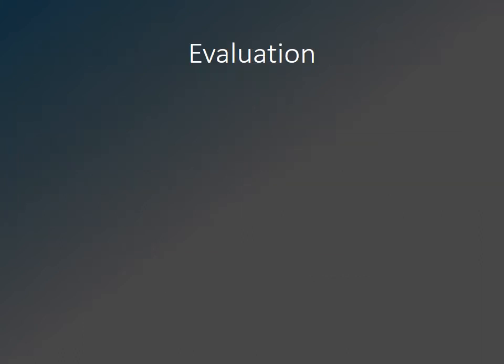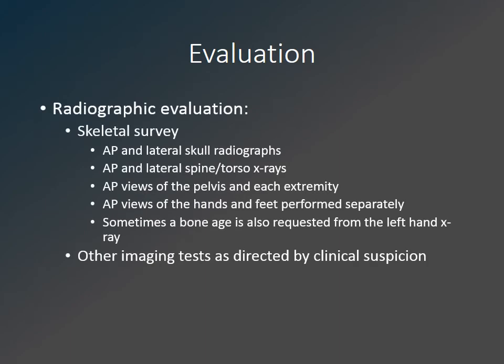The standard workup of a skeletal dysplasia is performed from a radiographic skeletal survey. This includes AP and lateral skull x-rays, AP and lateral torso to include the spine and chest wall, AP view of the pelvis, and AP view of the extremities. In a neonate, each extremity may be evaluated on a single radiograph, but in an older child, the upper and lower portions of each extremity should be imaged separately. AP radiographs of the hands and feet are performed separately, and in some cases a bone age may be assessed from the left-hand radiograph.